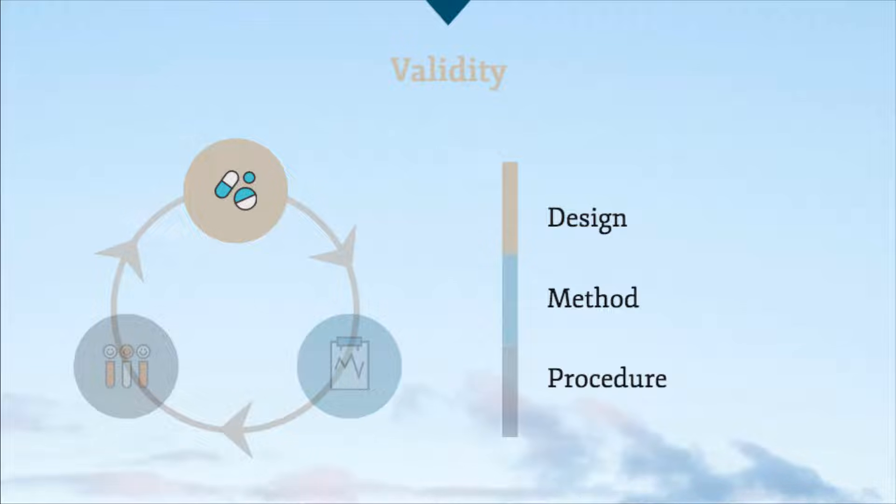When we talk about validity, this refers to the soundness or the rigour of a particular study and the extent to which the conclusions of the research are true within the specific context the research was undertaken. This is also known as internal validity. A more valid research design method and procedure produces less biased results, giving us more reliable, generalisable conclusions.